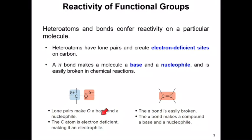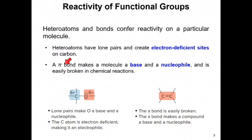The lone pairs of electrons on oxygen make it a Lewis base — it acts as an electron donor and a nucleophile. The carbon atom, on the other hand, is electron-deficient because it bears a partial positive charge, making it an electrophile. A pi bond also makes a molecule a base and a nucleophile, and it is easily broken in many chemical reactions. A pi bond is a good source of a pair of electrons, so double bonds and triple bonds are also considered reactive sites.